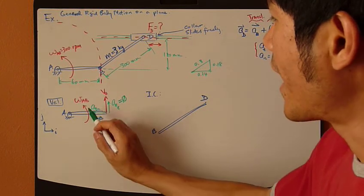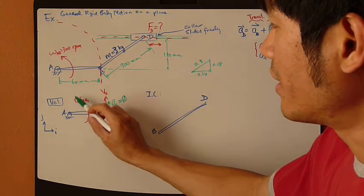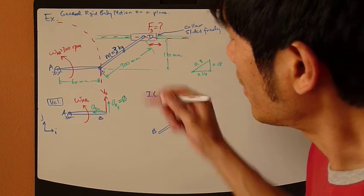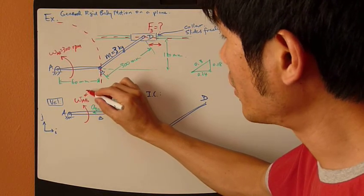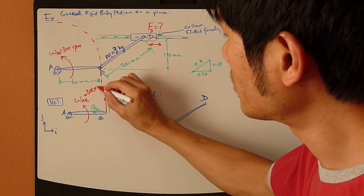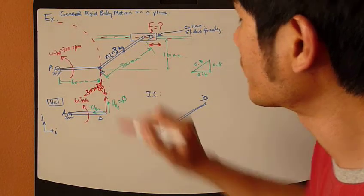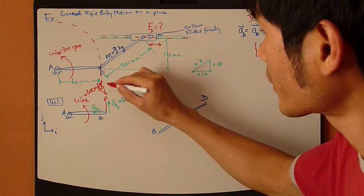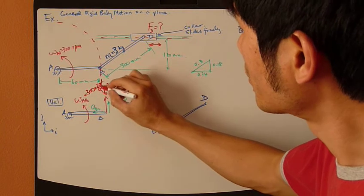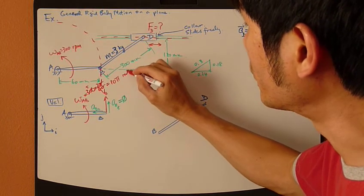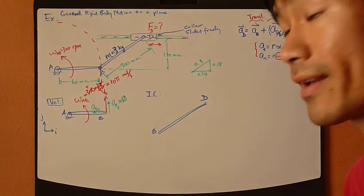Normal component is R omega square. And omega is this guy right here, 300 RPM. And you need to convert it to radian per second. So, 2 pi over 60. So that's 5, 5 times 2, 10 pi radian per second.